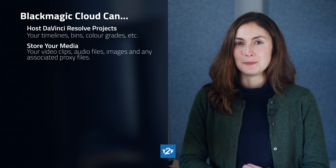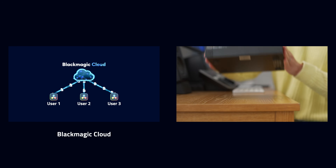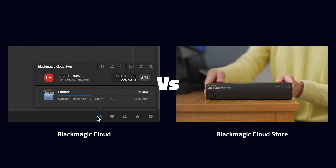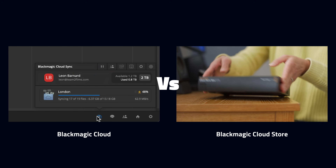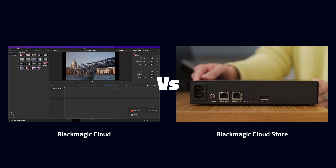Quick vocab lesson. What's the difference between Blackmagic Cloud and the Blackmagic Cloud Store? Blackmagic Cloud lives in the cloud — it's the service used to host your projects and media. Blackmagic Cloud Store lives in your office. It's a network-attached storage device, only accessible on your home or office network. Today we'll show you how to get started using Blackmagic Cloud to share your projects and media.